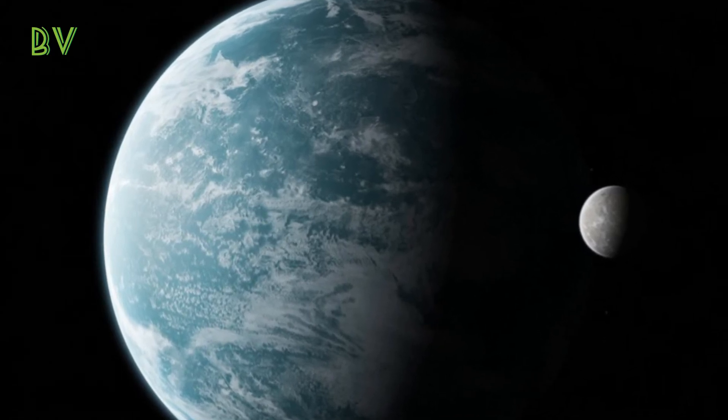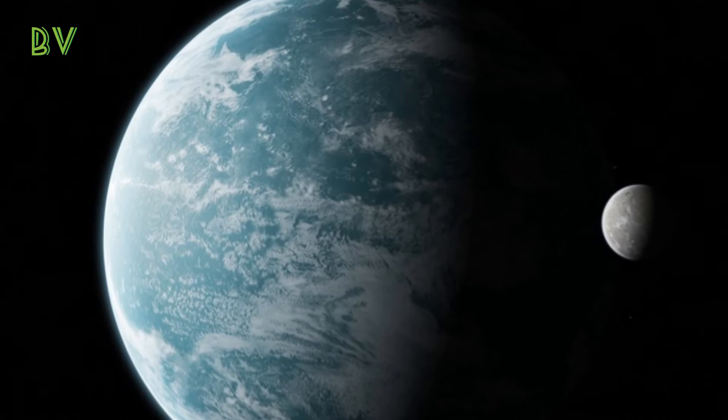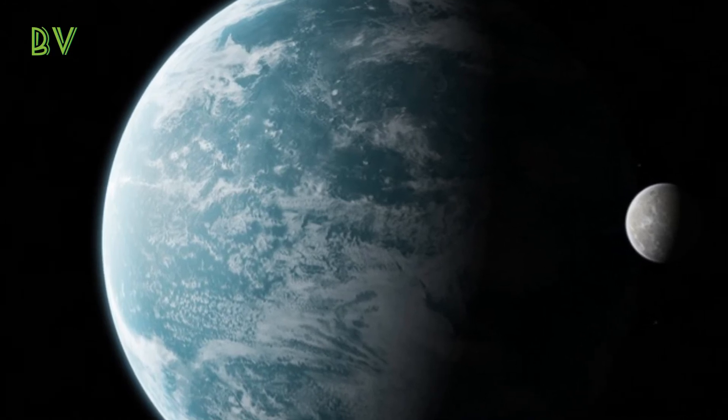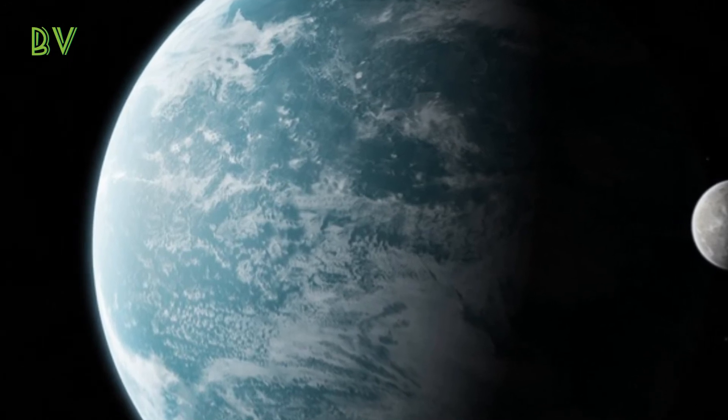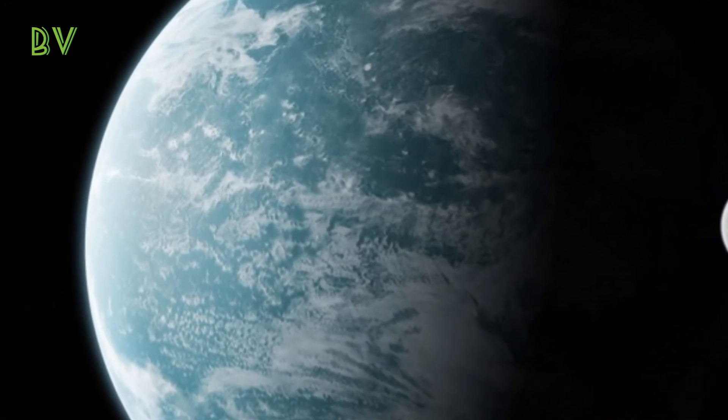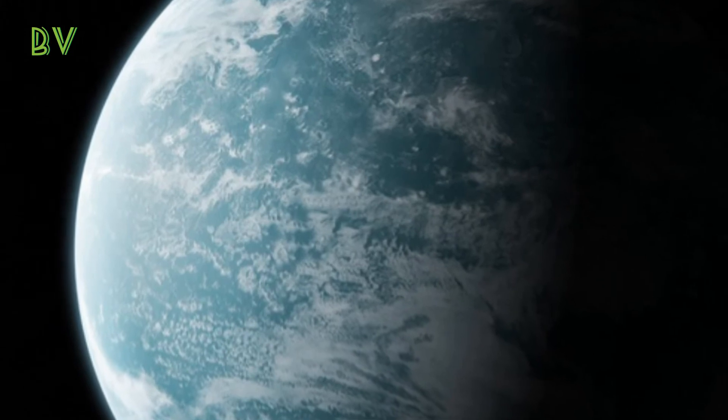All of these planets were found by the Kepler space telescope. The telescope looks for alien worlds by measuring dips in the parent star's light as the planet zooms across the star from Earth's point of view.